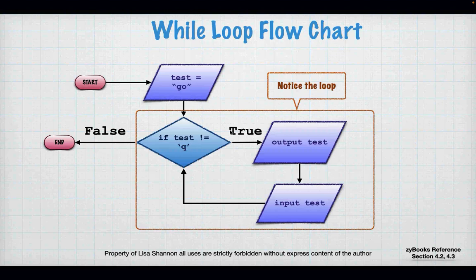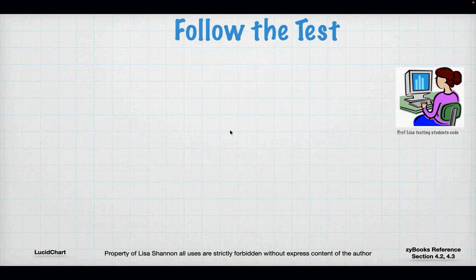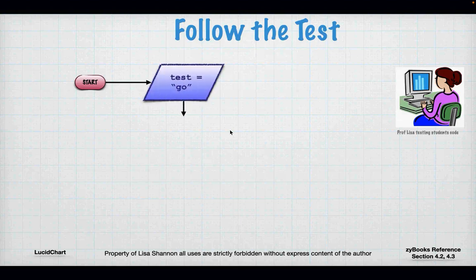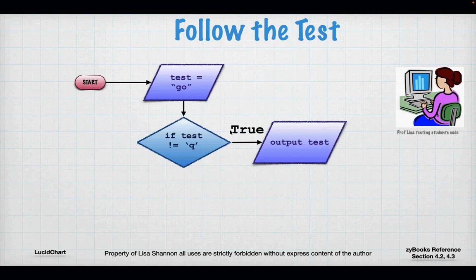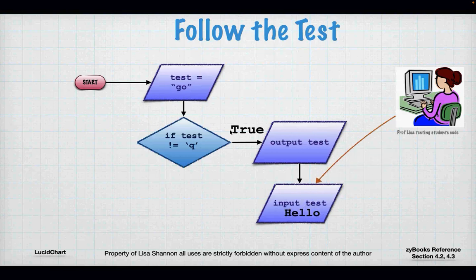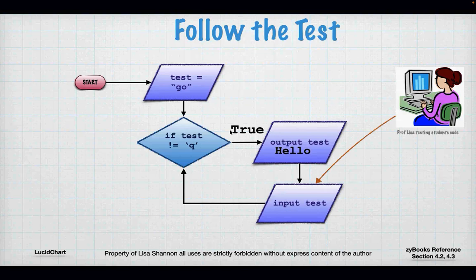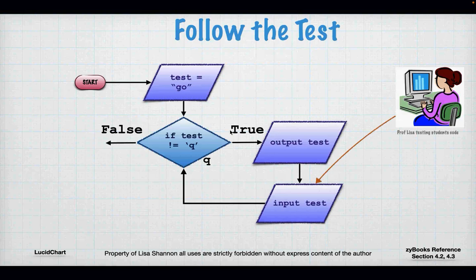Following the flowchart: `test = go`, `test != Q` is true, output test, get input — entering 'hello'. Go back to the top of the loop. Hello is not Q, so go down again. Professor Lisa inputs Q, Q equals Q, the test evaluates to false, and the program ends.